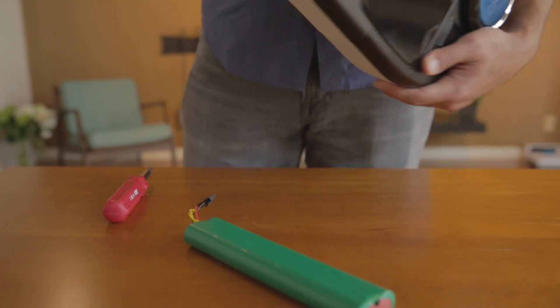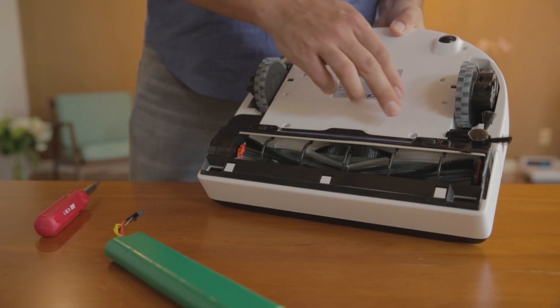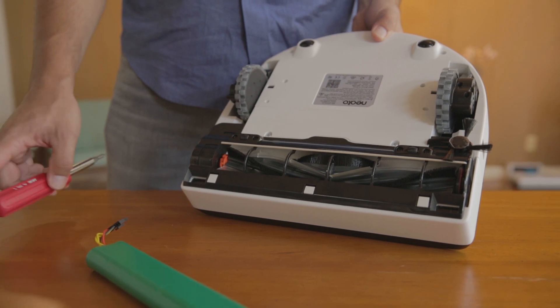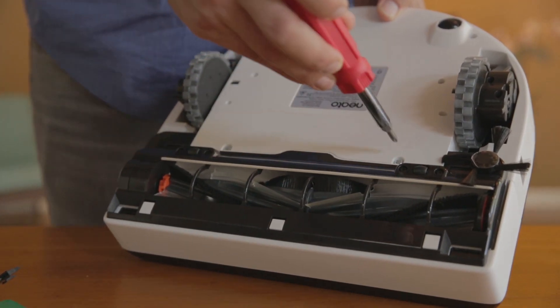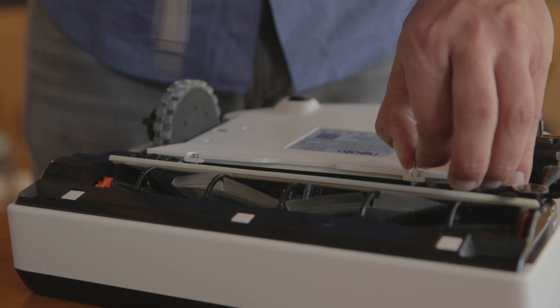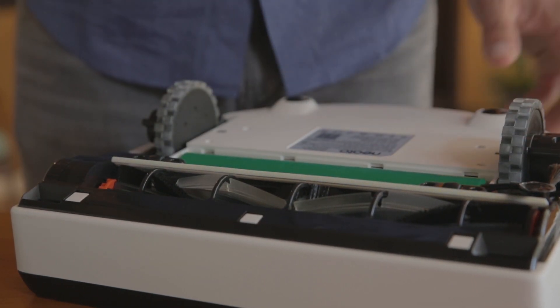To replace the battery, flip the robot over and locate the two screws securing the battery door to the robot. Using a Phillips head screwdriver, remove the screws and lift the battery door away.